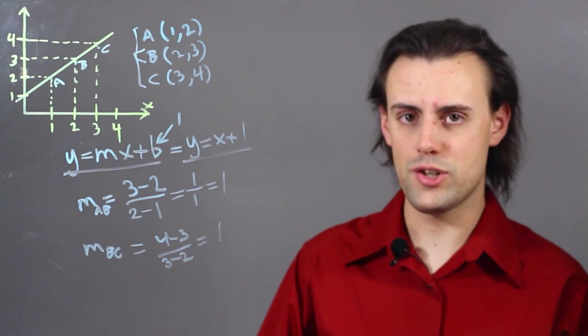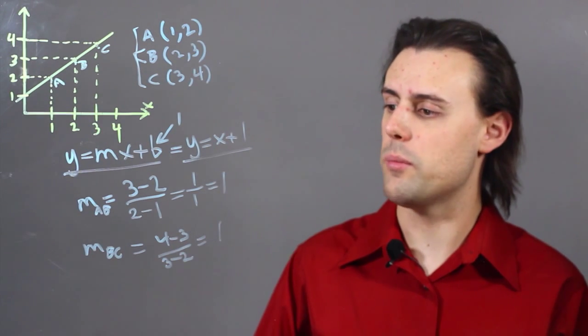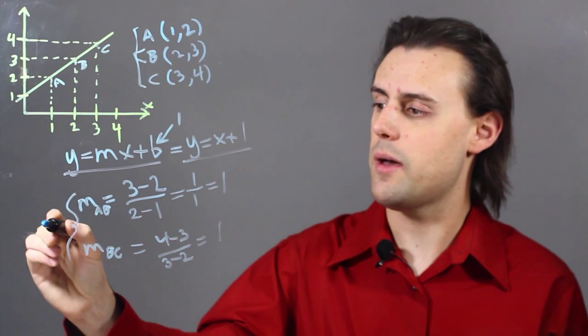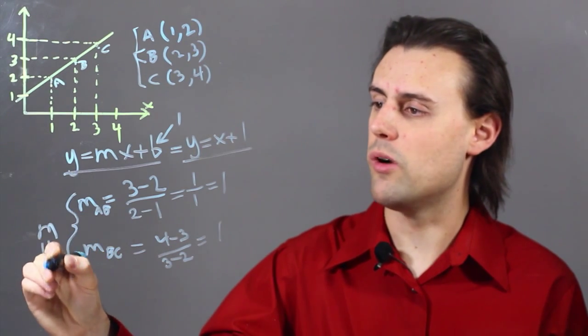So the constant of proportionality, then, would be the slope, which is just m, and that's equal to 1.